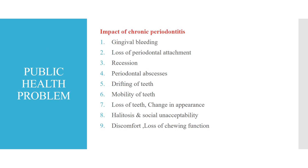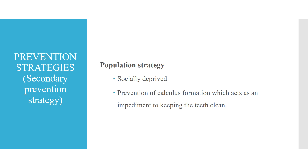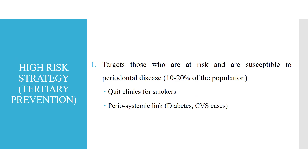Impact of chronic periodontitis as a public health problem includes gingival bleeding, loss of periodontal attachment, recession, periodontal abscess, drifting of teeth, mobility of teeth, loss of teeth, change in appearance, halitosis and social unacceptability, discomfort and loss of function. Prevention strategies: population strategy is mainly secondary prevention for socially deprived people, focusing on prevention of calculus formation. High-risk strategy is tertiary prevention for smokers, diabetics, and cardiovascular disease patients who are susceptible to periodontal disease.